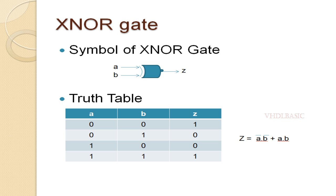Closely looking at the truth table: whenever A equals zero, output Z will be B-bar. When A is zero and B is zero, output Z is one; when A is zero and B is one, output Z is zero. When A is one, output Z reflects whatever value is present in B. The boolean expression of the XNOR gate is: Z equals A-bar dot B-bar plus A dot B.